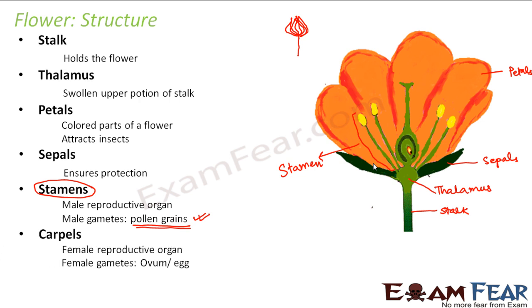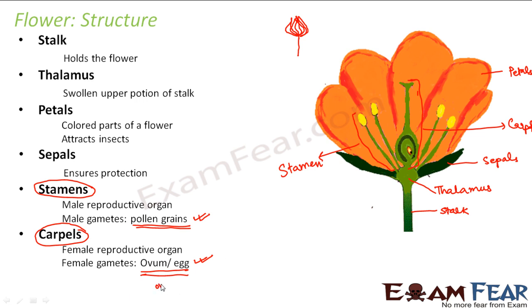The last part is the carpel, which is the female reproductive organ. This produces the female sex cell. The carpel is the glass-like structure in the center. Inside the carpel there are different parts which we will study next. The female gametes in a plant are known as ovum or egg — the plural of ovum is ova. So male gametes are pollen grains and female gametes are ovum or egg.